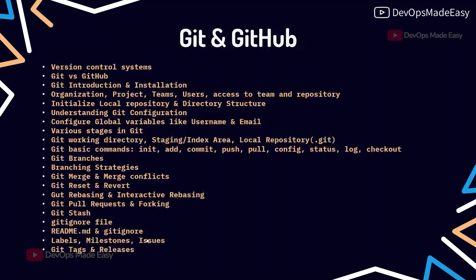Git and GitHub administration is also a very in-depth topic. You'll understand what version controlling is, the difference between Git and GitHub, how to install Git, and basic administration like creating organizations, projects, teams, and users. Topics include creating local Git repositories, branching, branching strategies, merging, merge conflicts, Git rebasing, pull requests, and Git fork.